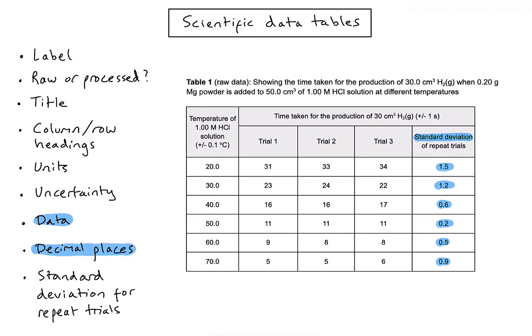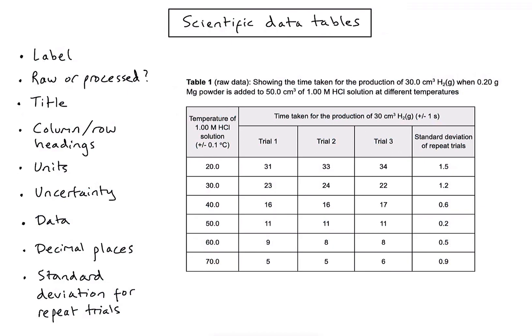Because standard deviation is technically calculated from the data, you can make an exception on decimal places — though it's worth explaining that underneath the table. Finally, including standard deviation in your raw data table is very useful, even though students often leave it out. Standard deviation gives a sense of the reliability of your repeat trials: if your methodology is sound, repeat trials should give similar numbers and therefore a low standard deviation. In your conclusion and evaluation you can refer back to it to comment on reliability. And that's it for raw data tables — hopefully this video is of some help.